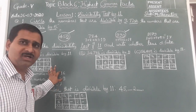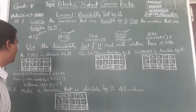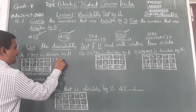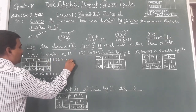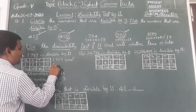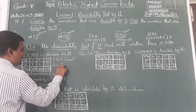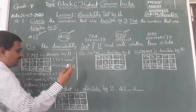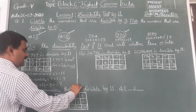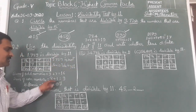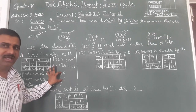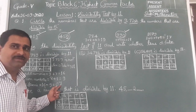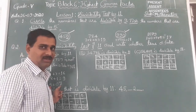The answers we got are not the same and the difference is also not divisible by 11. Therefore, the number 1,789 is not divisible by 11. Because the sum of odd places and even places is not the same, and the difference is also not divisible by 11, you can say clearly.